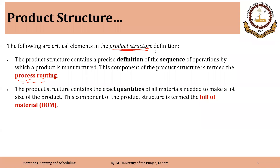We will focus more on the second element of a product structure in today's lecture and the next — that is the bill of material. The product structure contains the exact quantities of all materials needed to make a lot size of the product. This component is termed the bill of material, and it is focused on quantities required to make a lot size or a single product, depending upon the situation.